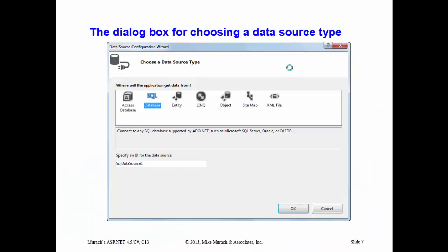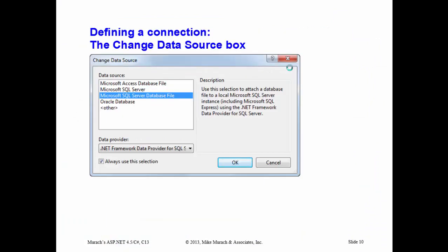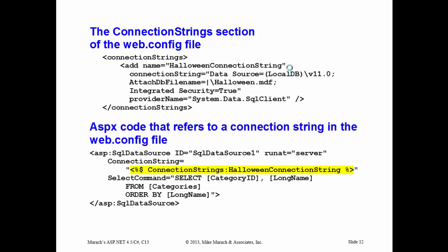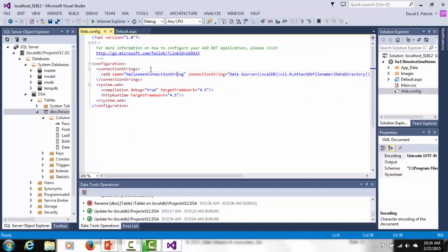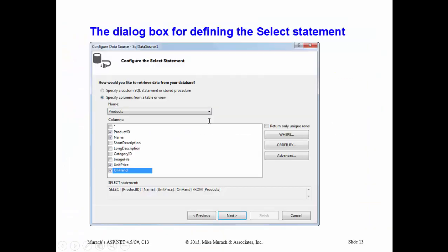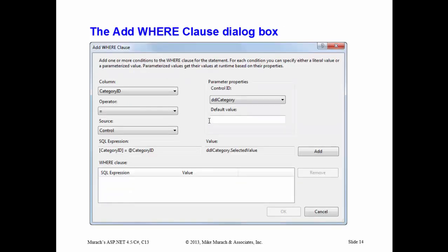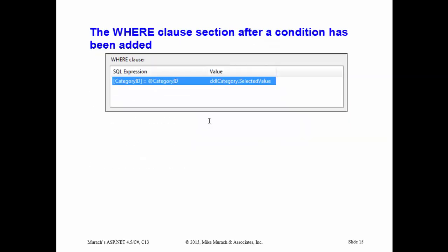The next few slides just talk about walking through that wizard, so I won't go into detail here. Adding connections, choosing different data sources, choosing the connection string — this is what gets stored in web.config. And that's the reference to that entry in web.config. Going back to Visual Studio and opening web.config, there's the connection string stored there with its actual value. Some slides step through more wizard screens for selecting different columns and values — I cover all of that in the Exercise 13.1 video.